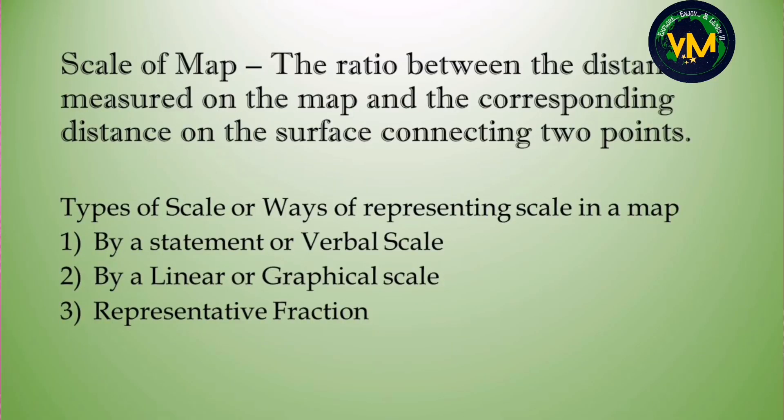The next topic is map scale, or scale of the map. The ratio between the distance measured on the map to the corresponding distance on the surface connecting two points is called map scale. You need to understand two things: map distance means the distance between two places on the map, and ground distance means the distance between the same two places on the actual ground.